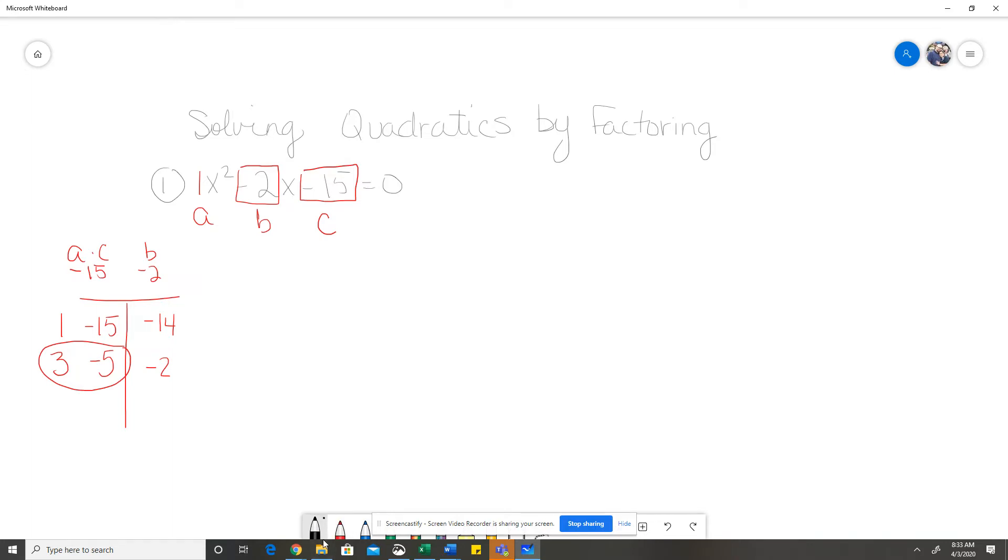So, I'm going to come over here, and I'm going to put 1x plus 3, and 1x minus 5 equals 0. And I'm going to check for any GCFs, and in this case, the GCF for each of my binomial factors is 1. So, I really don't have a GCF I need to worry about. I can go straight up with the x plus 3 and x minus 5.